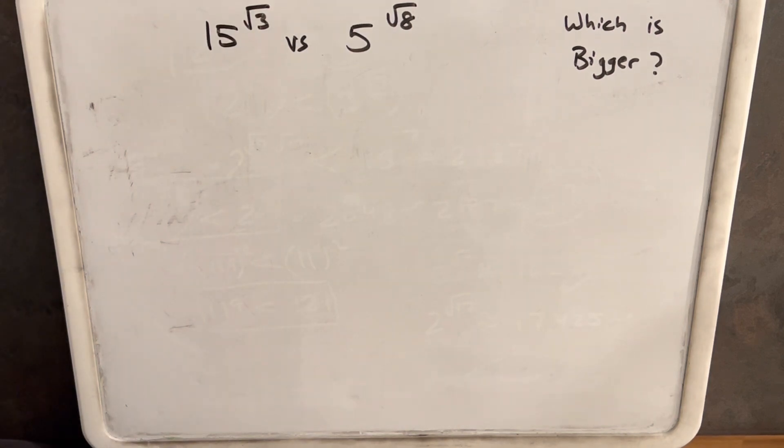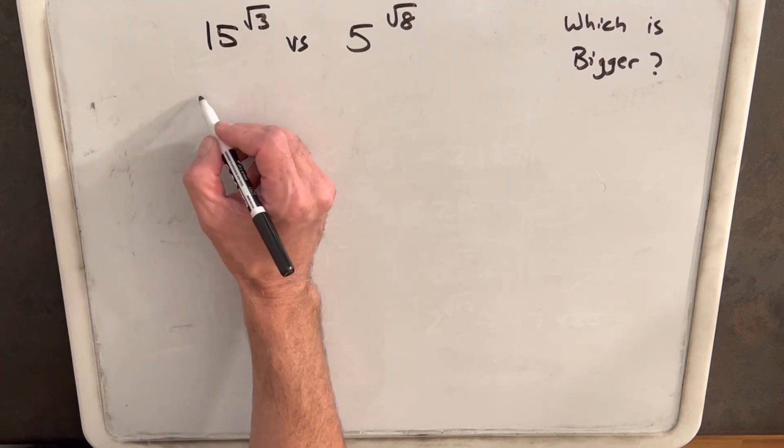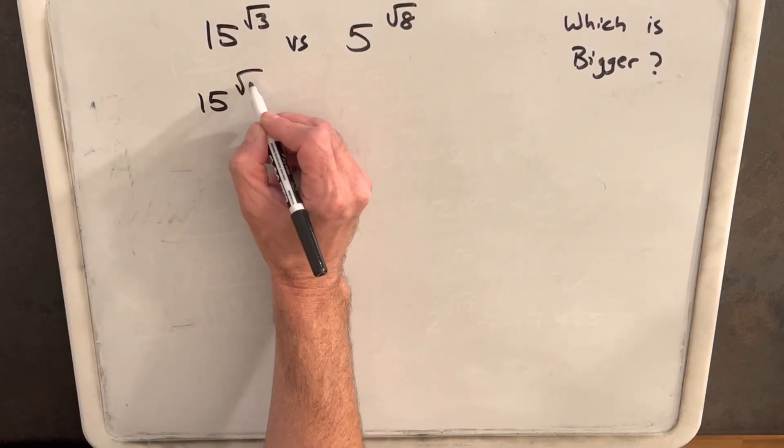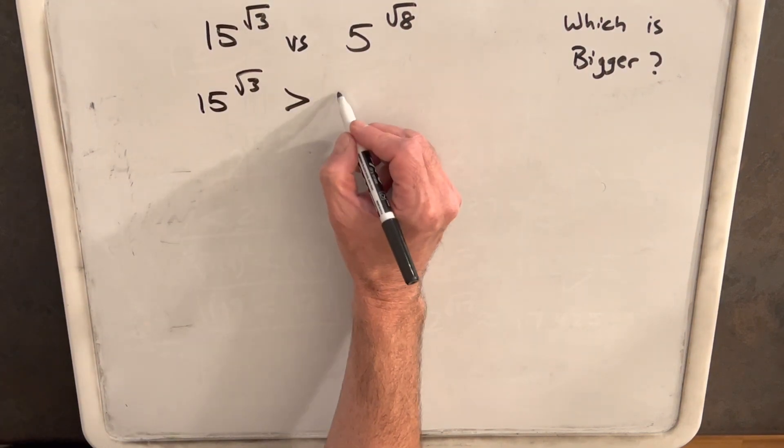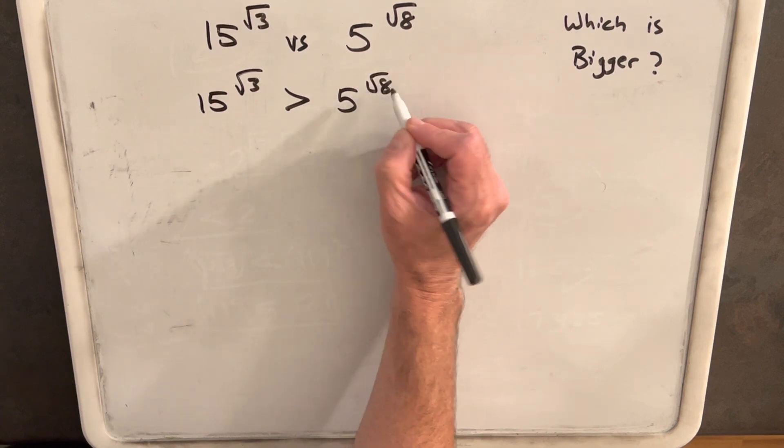Which is bigger? 15 to the square root of 3 or 5 to the square root of 8? I'm going to start by guessing that 15 to the square root of 3 is larger just because I feel like it.